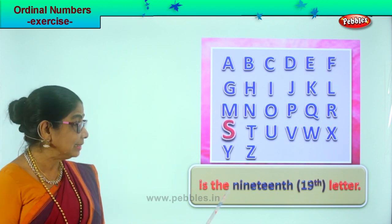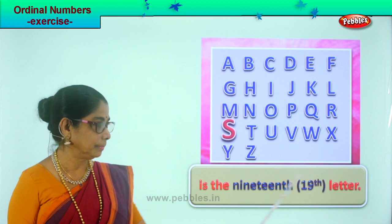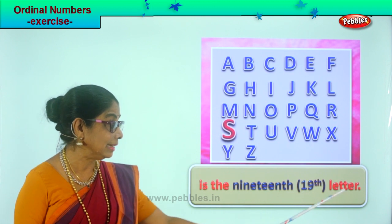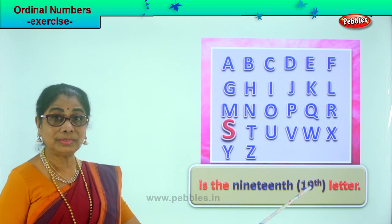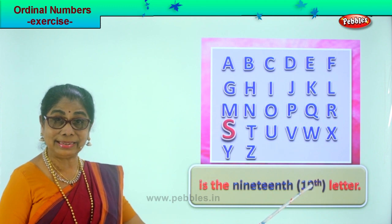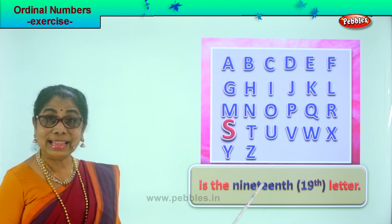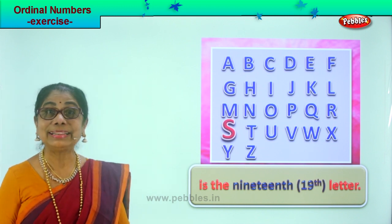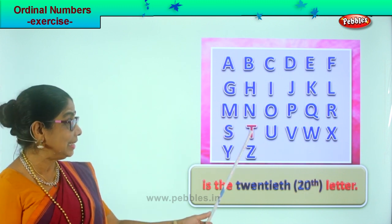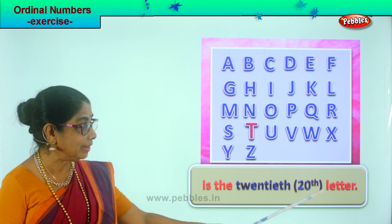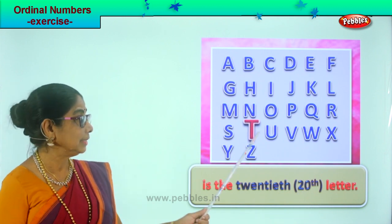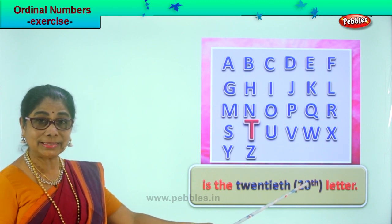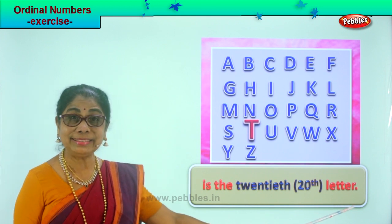S is the nineteenth letter. Letter S is the nineteenth letter — nineteen and TH. After S comes T. T is the twentieth letter. Look how you write it: twenty and TH. T is the twentieth letter.